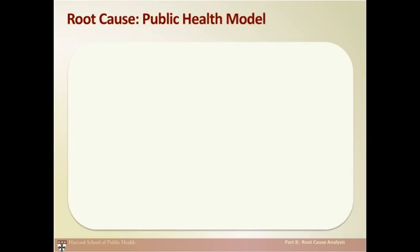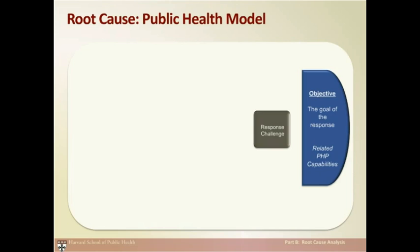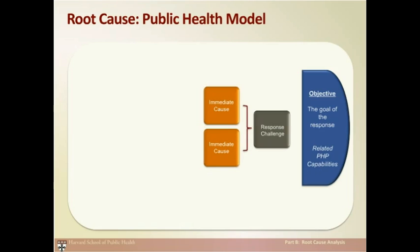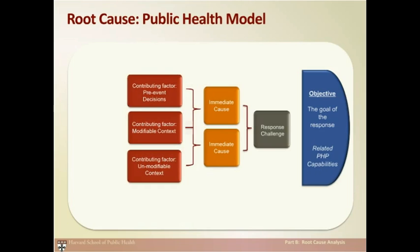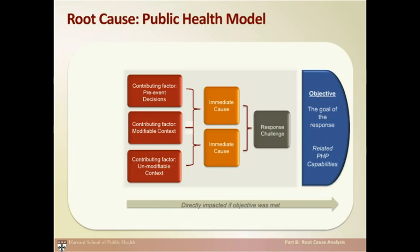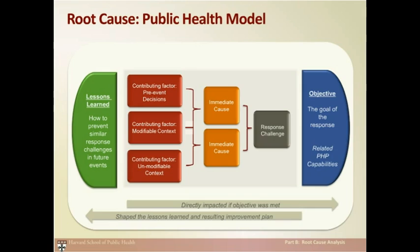Now that we understand the basics of root cause analysis, let's look at using root cause analysis to solve more complex problems. We start with identifying a response challenge — the high-level concept that made this event difficult to respond to. The objective or goal of the response is also considered, as it's important to remember the ultimate mission. A more complex problem may have a number of immediate causes, which are clues to dig deeper to find the contributing factors, or root causes, that directly impacted whether response objectives were met. Identifying what behaviors, actions, or processes need to be changed leads to lessons learned — recommendations for preventing similar response challenges in future events. We also consider any adaptations or solutions and shifts in routine that helped improve the situations surrounding the response challenge.